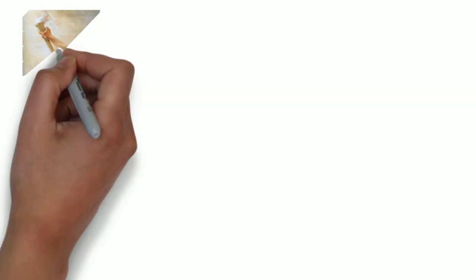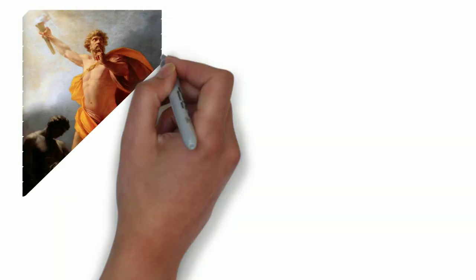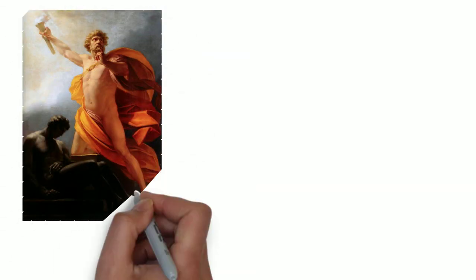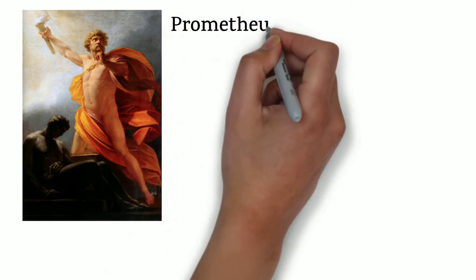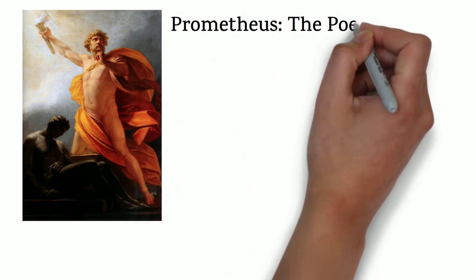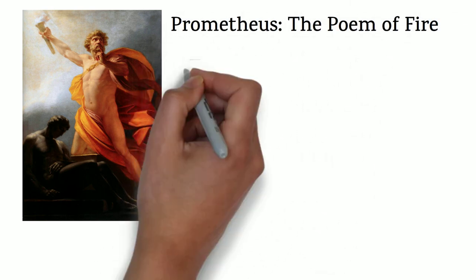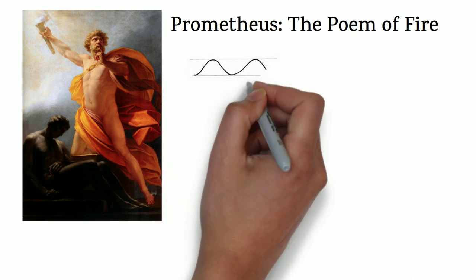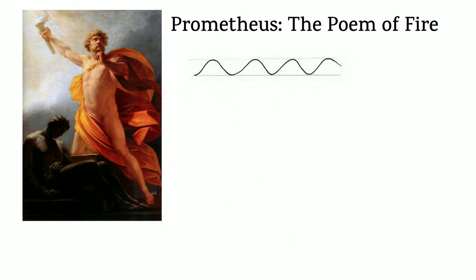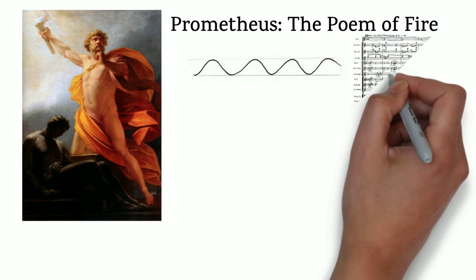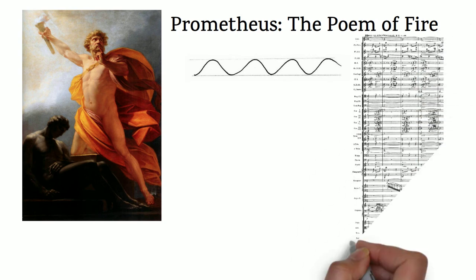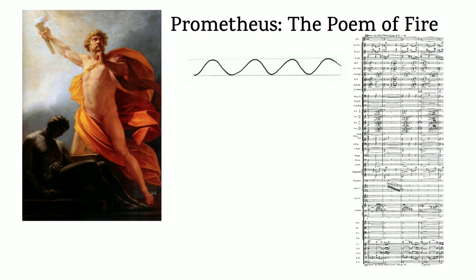Prometheus: the Poem of Fire features his most advanced use of climaxes. There are about four climaxes spread out through the work, each one longer than the last. Like previous pieces discussed earlier, the largest climax at the very end is the primary motif.